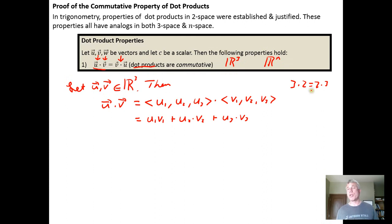So what we do is use the commutative property for real numbers to change the order of each of these three products. So u1 times v1 is the same as v1 times u1 plus u2 times v2 is the same as v2 times u2 plus u3 times v3 is the same as v3 times u3.